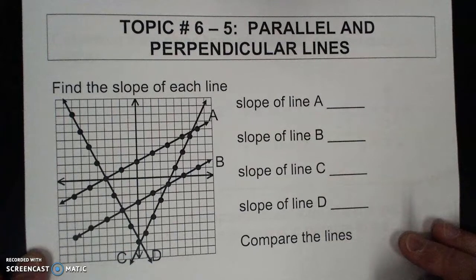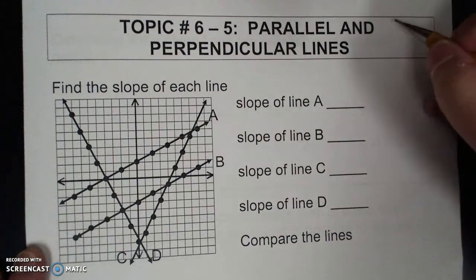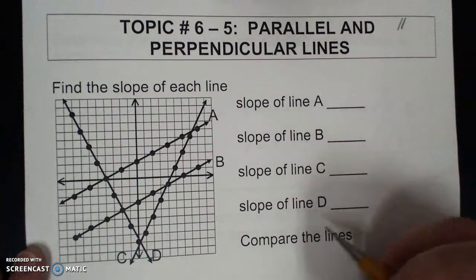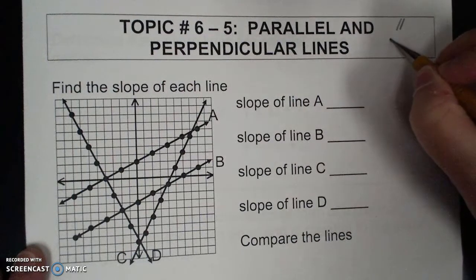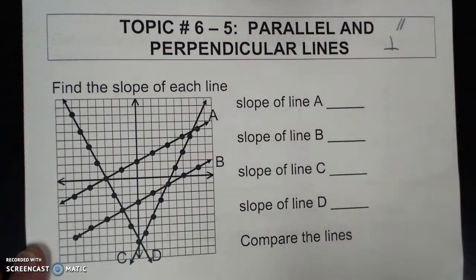Welcome to 6-5, Parallel and Perpendicular Lines. I'm going to start with the symbol for parallel is this, and the symbol for perpendicular is this, so when I use them throughout the lesson you'll recognize them.